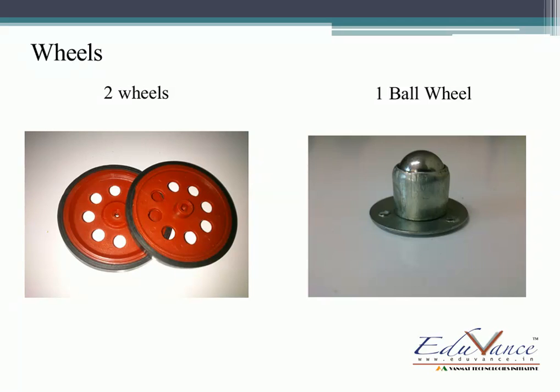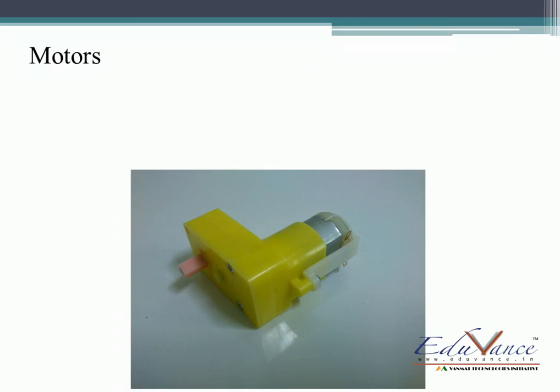Now you might be wondering what we are actually going to do with just two normal wheels, motors, and one ball wheel. As we go on making things, you will understand what is going to happen. The second thing we are using is motors. This is the motor we are going to use. The beauty of this motor is that it is bidirectional. Can you see these two terminals here?